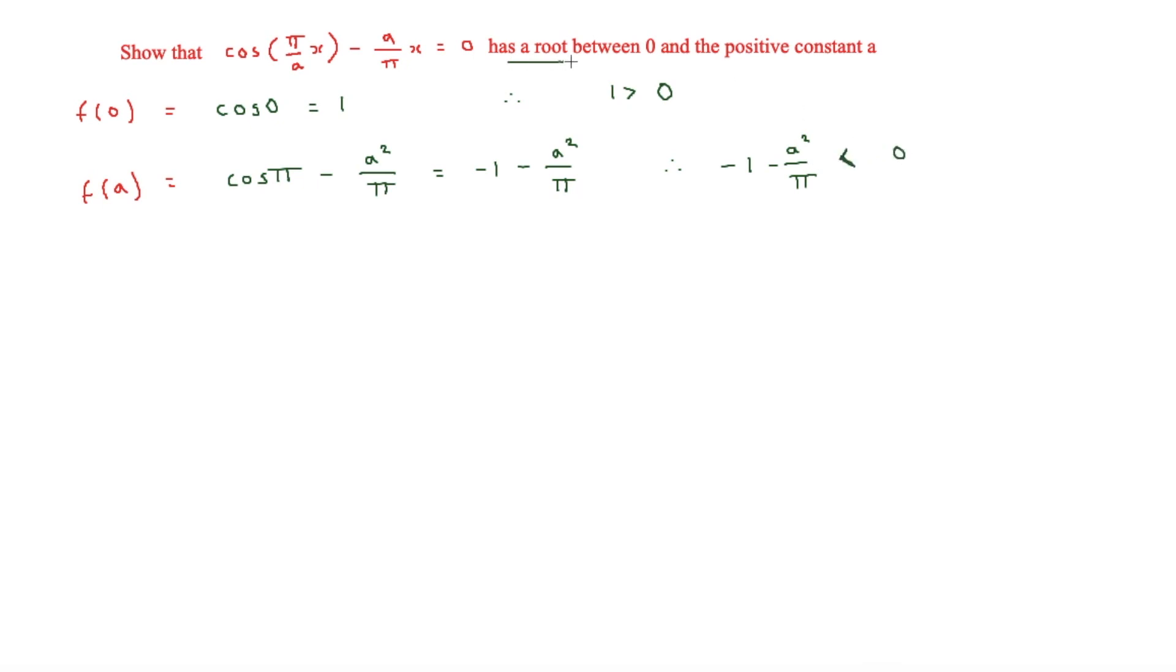So it has a root because there is a change in sign. We don't always need a number to show this. As shown in this case, we can instead show by just basic knowledge of things like squaring. In this case, we know that even though a is not a number, the function value is always going to be less than 0.